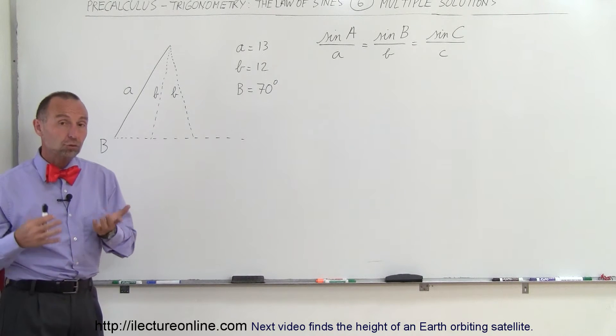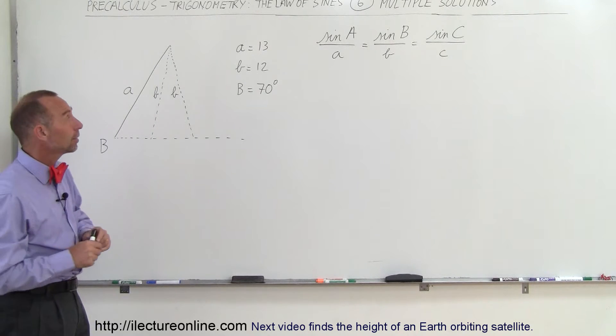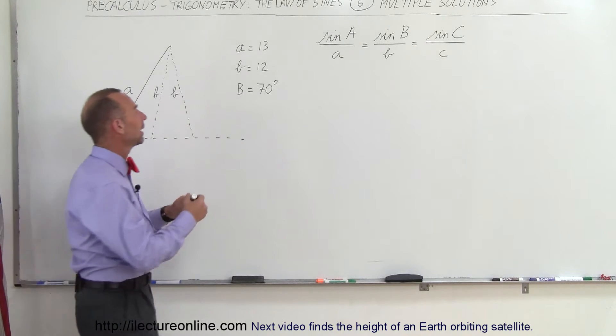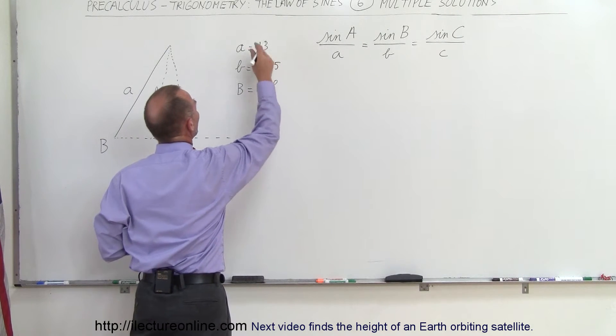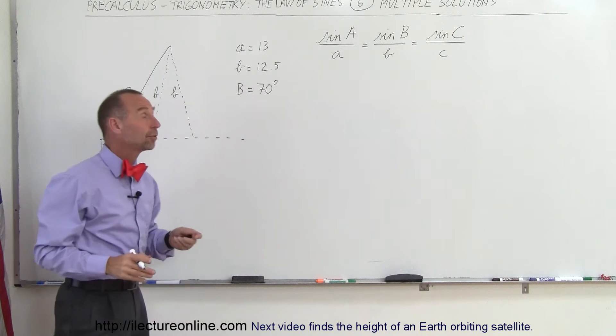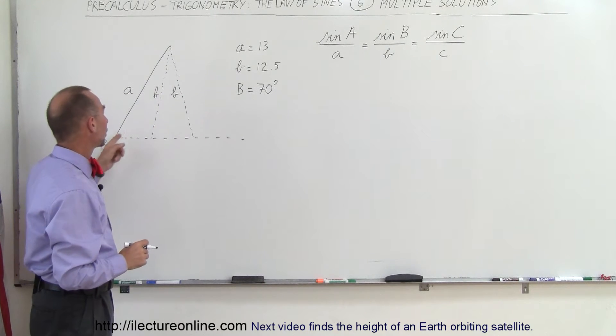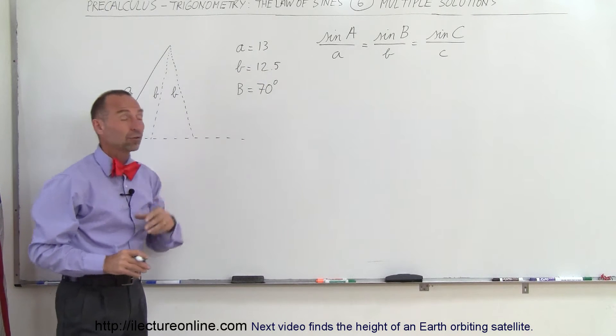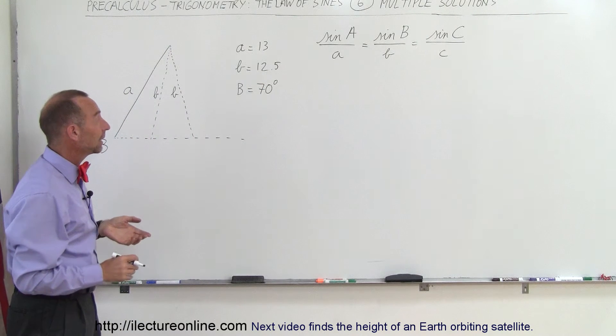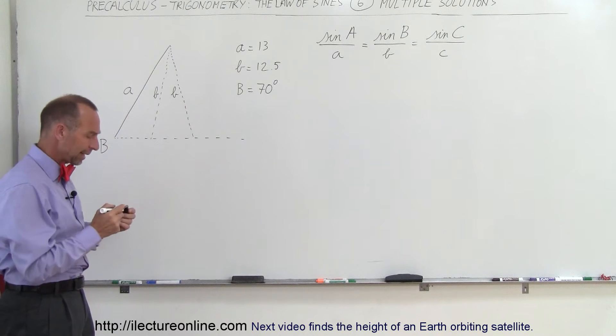Let's say you're given a triangle. You don't know what it looks like, but you're told that one of the sides has a length of 13 units, the other one is 12.5 units, and the angle across from the side that has a length of 12.5 units is 70 degrees. So what does the triangle look like?